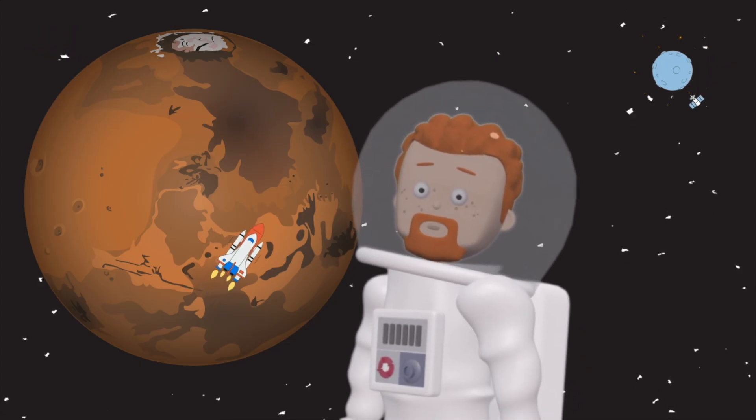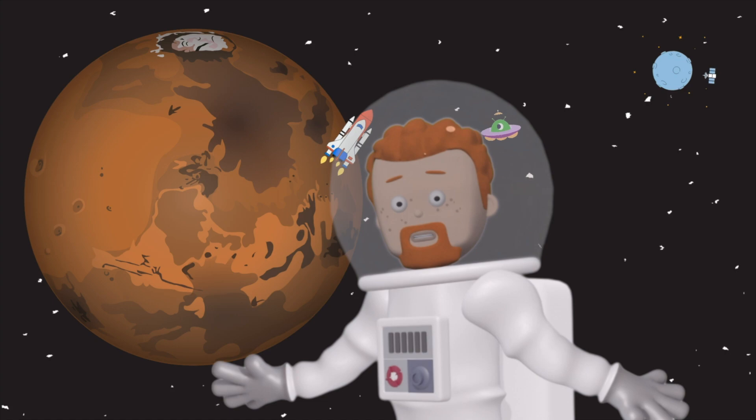Our first stop is the red planet Mars. Mars is known for its reddish color because of the iron oxide, or rust, on its surface.